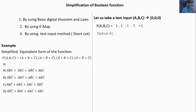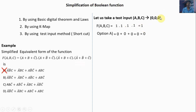Substitute in option A. Here A bar is 1, it is a multiplication term. If any one of the inputs is 0, the total multiplication will be 0. A bar is 1, B bar is 1, C is 0 — so the term is 0. Then A bar is 1, B is 0 — so 0. A is 0 — so 0. Totally you get the answer 0. So option A is not correct, because the function gives 1 for input 0, 0, 0 but option A gives 0. So option A is wrong.